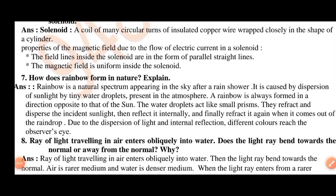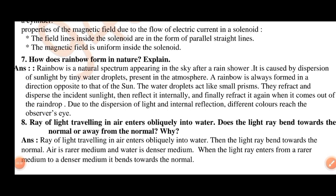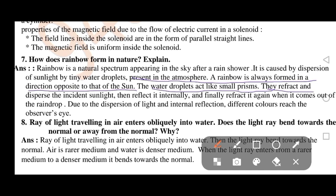How does a rainbow form in nature? Explain. Rainbow is a natural spectrum appearing in the sky after a rain shower. It is caused by dispersion of sunlight by tiny water droplets present in the atmosphere. A rainbow is always formed in a direction opposite to that of the sun. The water droplets act like small prisms. They refract and disperse the incident sunlight, then reflect it internally, and finally refract it again when it comes out of the raindrop. Due to the dispersion of light and internal reflection, different colors reach the observer's eye. This is how a rainbow is formed in nature.